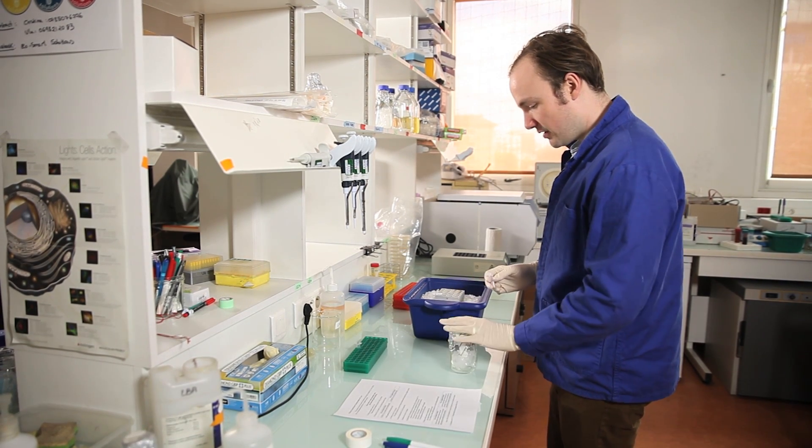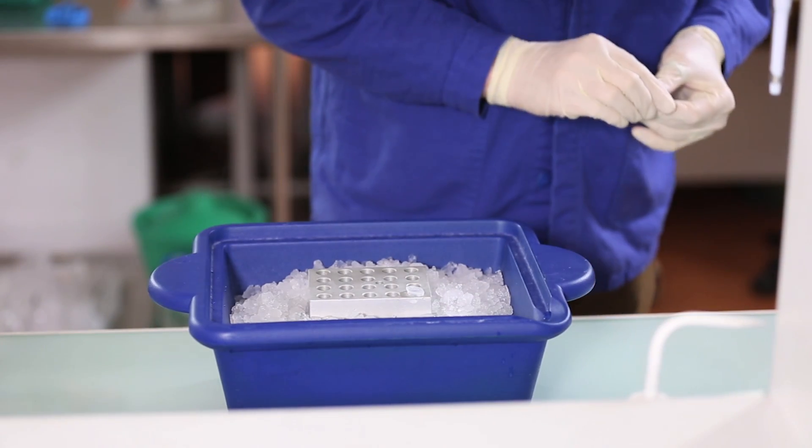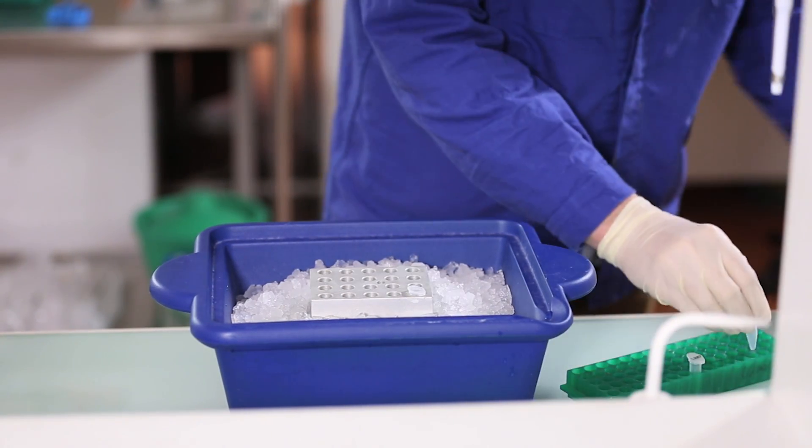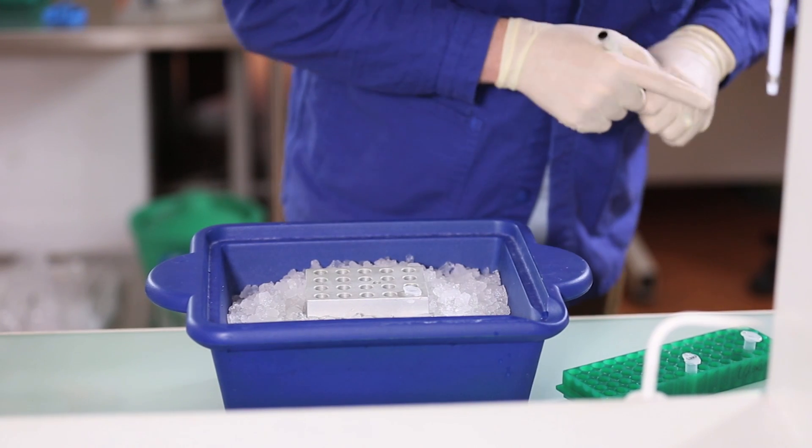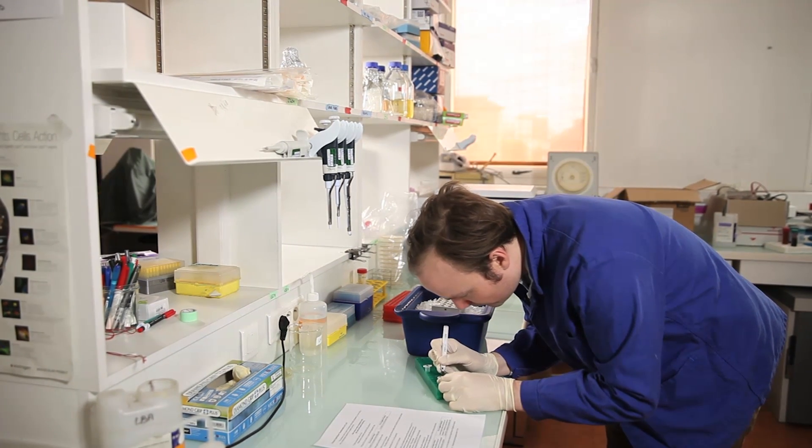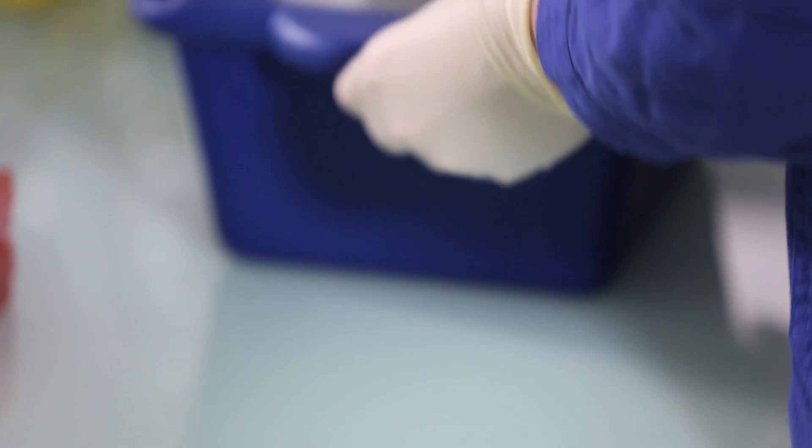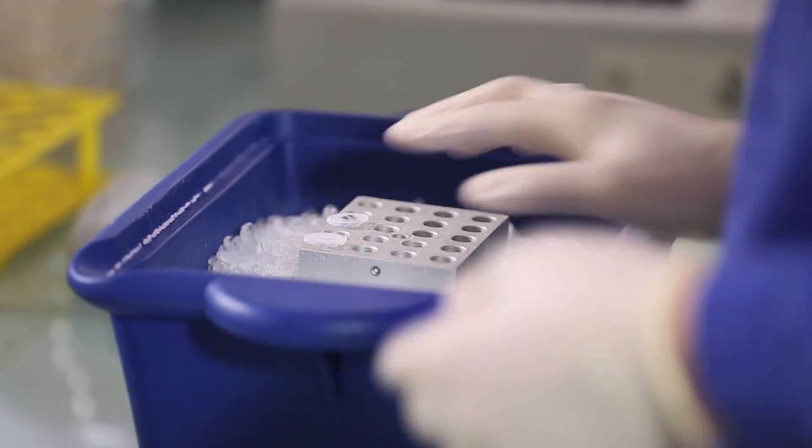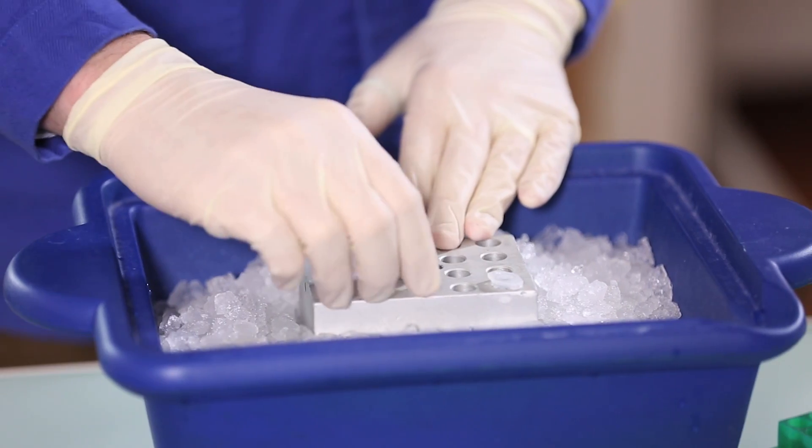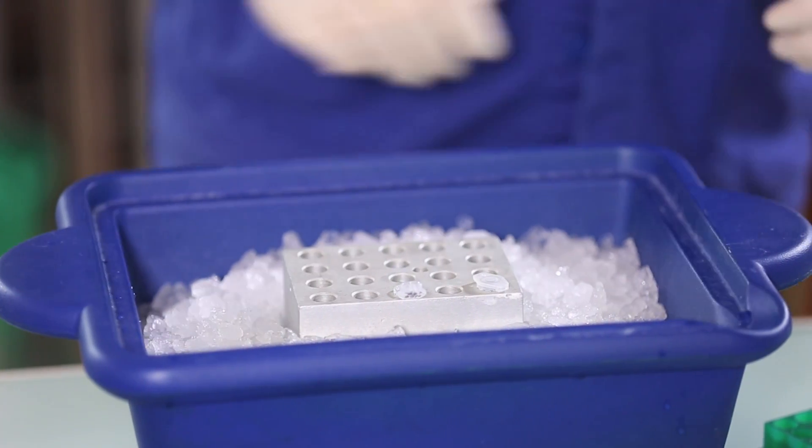So I will take my aliquot here. Don't forget to label. Okay, I'll put that on ice. Let that cool for a couple of minutes and then I'm going to aliquot 20 microliters of competent cells into that tube.